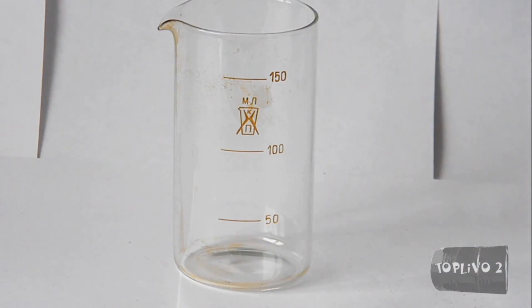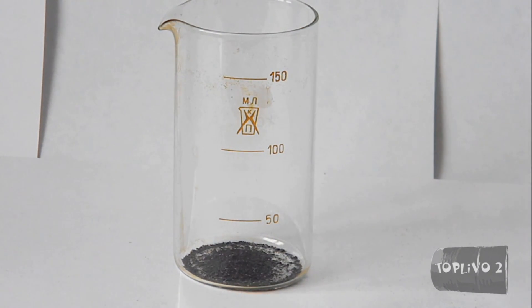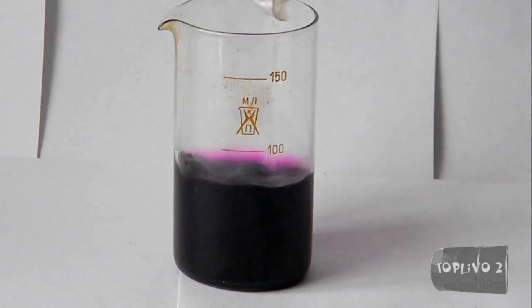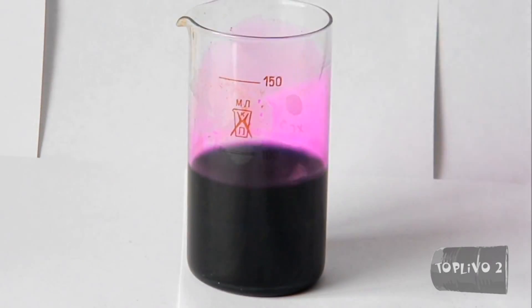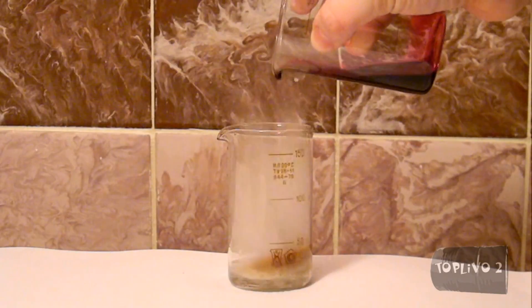Now let's make a solution of potassium permanganate. Take about a half of a teaspoon of potassium permanganate and dissolve it in approximately 15 ml of water. Stir until our crystals have been dissolved. And here we have our second catalyst.